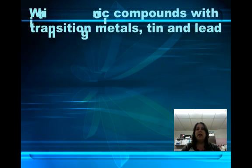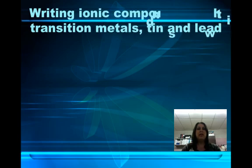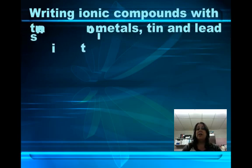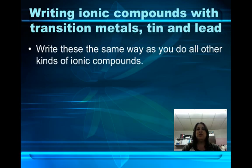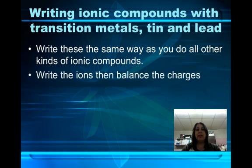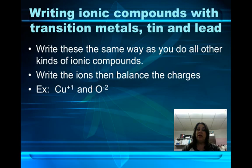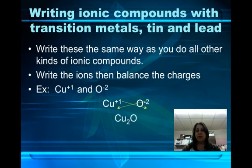Writing the ionic compounds with transition metals, tin, and lead is not as much of a problem as naming them. Writing them, we do exactly the same thing as you've been doing with all the other ionic compounds. We write the ions, then we balance the charges. For example, if I have Cu+1 and O-2, I write the ions and crisscross the charges to get the subscripts.